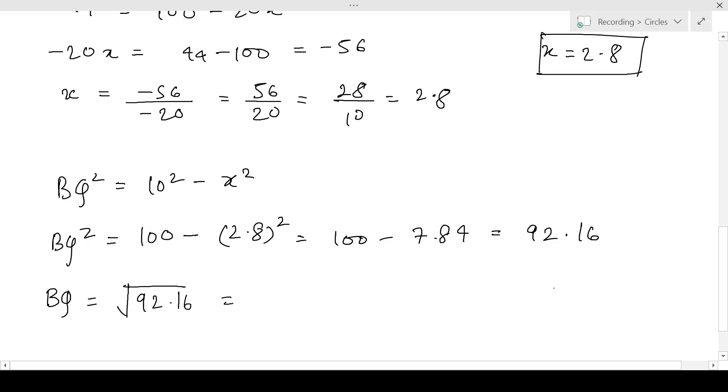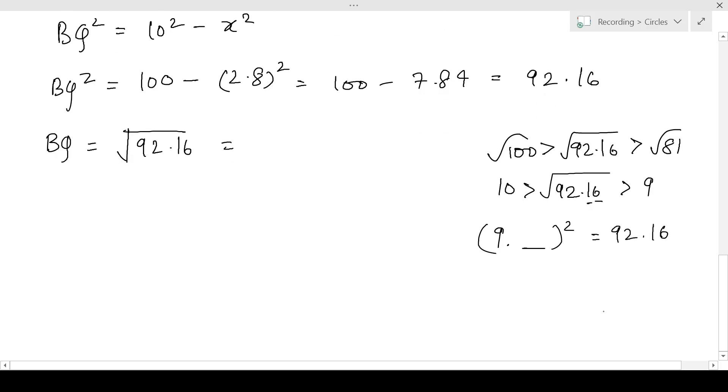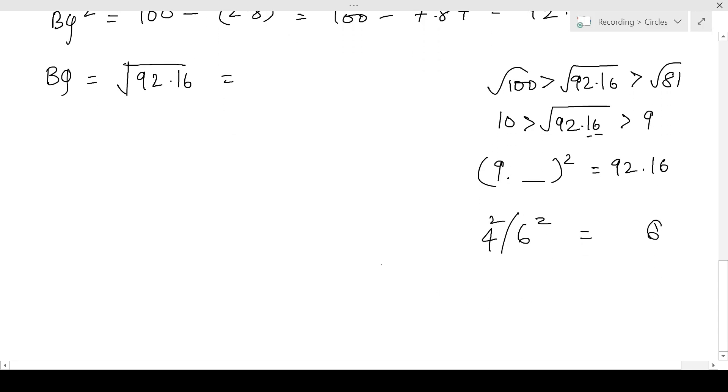So to solve this let's look at it carefully. Root 100 is 10 is greater than root 92.16 will be greater than root 81. So 10 is greater than root 92.16 is greater than 9. So now this has 2 digits, that means the root has 1 decimal place. So 9 point something squared is 92.16. So now in all of the digits only 6 or 4 squared will give the last digit to be 6. So now let's try 9.6 multiplied by 9.6.